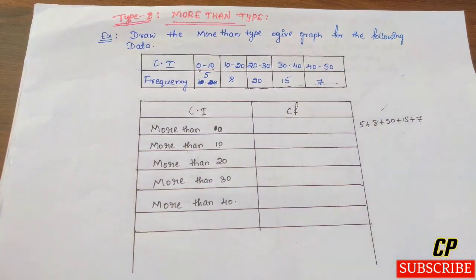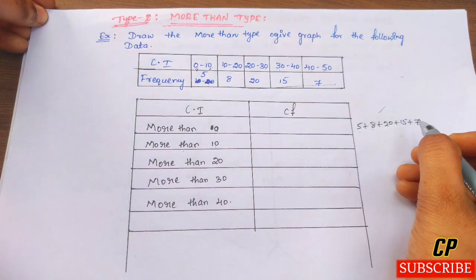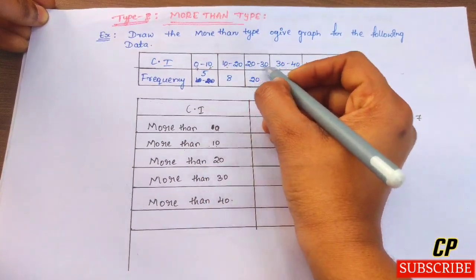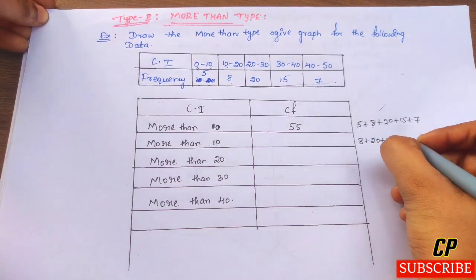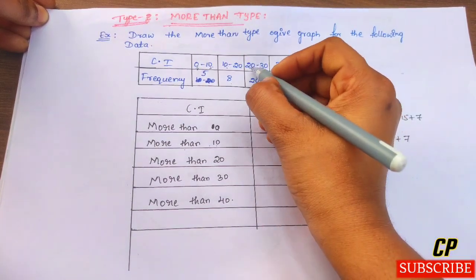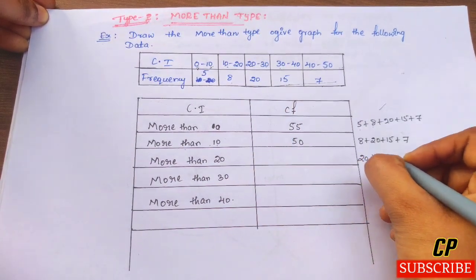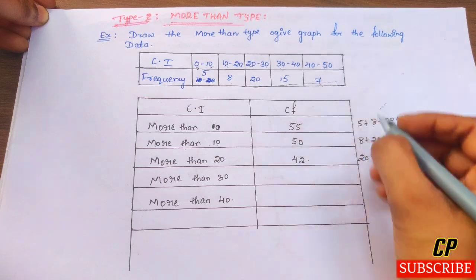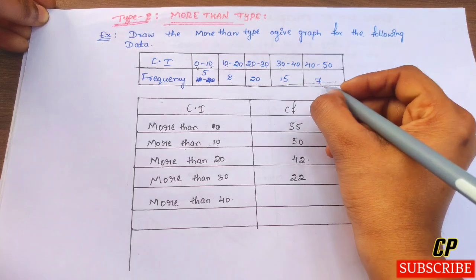Cumulative frequency for more than type: more than 0 is 5+8+20+15+7 = 55. More than 10 is 8+20+15+7 = 50. More than 20 is 20+15+7 = 42. More than 30 is 15+7 = 22. More than 40 is 7.